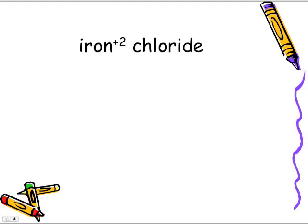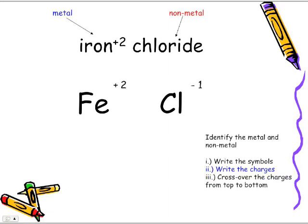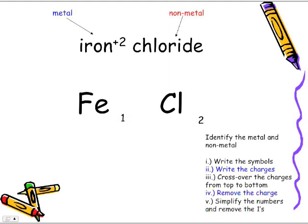We're going to use the iron plus two chloride. We've already identified metal and nonmetal. We write the symbols Fe, Cl. Now we write the charges based on which iron we're picking — it's the plus two. Chloride doesn't change; it's negative one. Step number three, we cross over the charges from top to bottom, remove the charges, and simplify. It's already in lowest terms, one to two, so we just remove the ones. The formula is FeCl2.